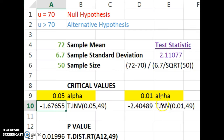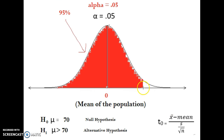If the person conducting the hypothesis test really didn't want to risk rejecting the null hypothesis when they shouldn't, they may choose a smaller alpha of 0.01. With just 1% in the tail, that gives you a critical value of 2.40489. Comparing that to a test statistic of 2.11 — since 2.4 is further out than 2.11, the test statistic falls in the non-rejection region. So if alpha is 0.01, we would not reject the null hypothesis.